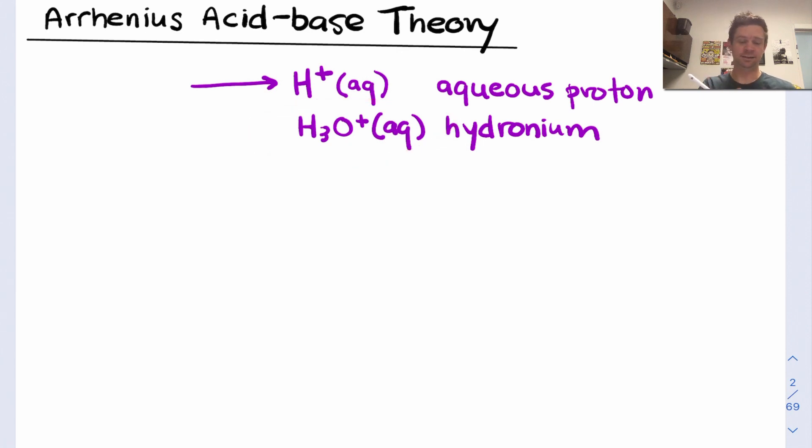An aqueous acid is any species that does some kind of reaction involving an increase in the concentration of H+ in solution. We can write a chemical equation in which aqueous H+ or H3O+ shows up on the product side. This is what's known as an aqueous acid, HA.